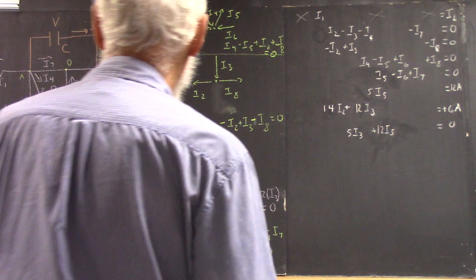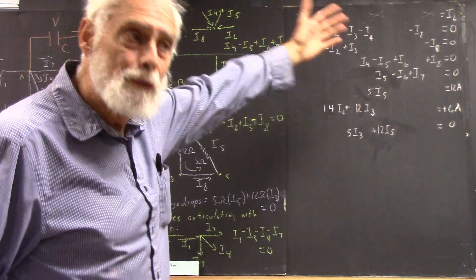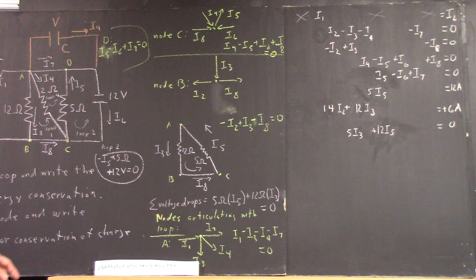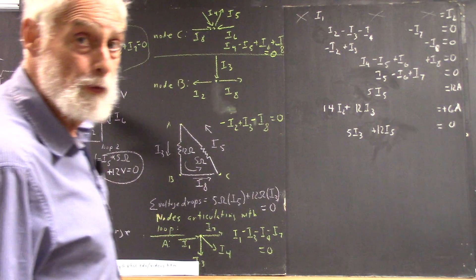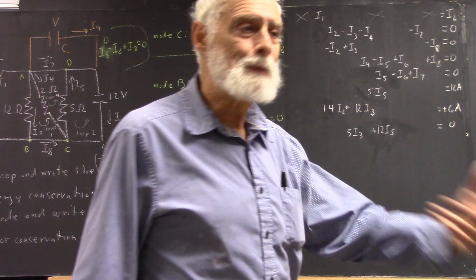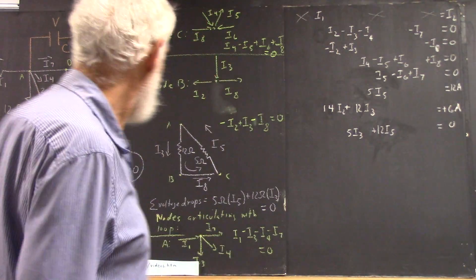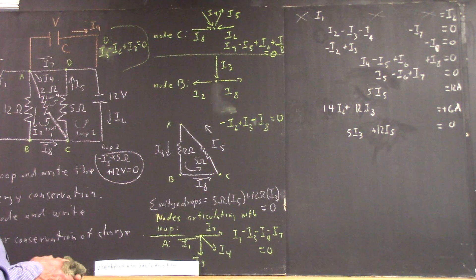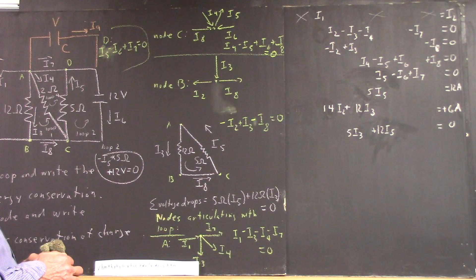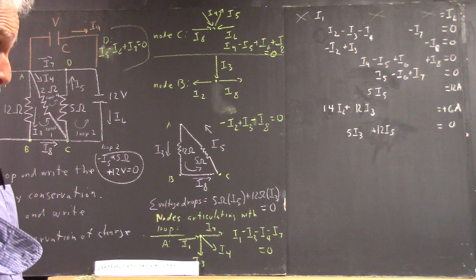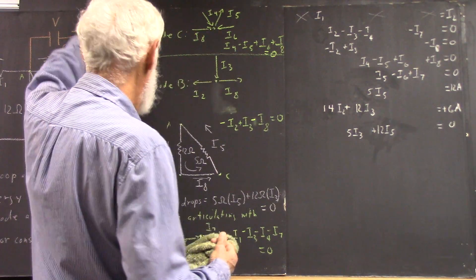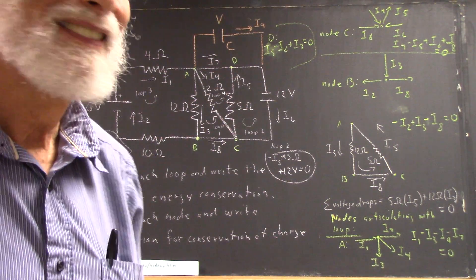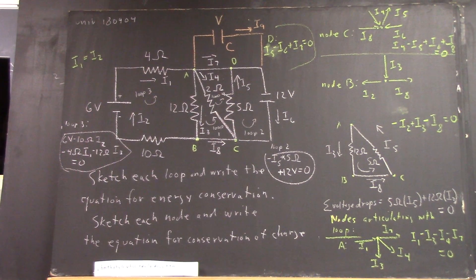So, the process is just a process of identifying independent loops, nodes, writing down the equations, making sure you've got enough. And then, you probably have an extra equation, like we haven't written the equation down for what I call loop 4. It's off the screen. But we can then substitute our solutions in to that loop and make sure that everything works. So, that's the process. Okay. So, that's the process. Now, what if we have a capacitor in here? What equation do you get for that loop?